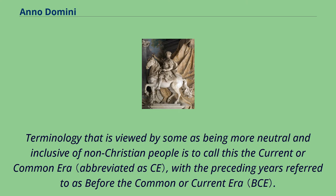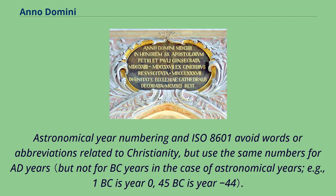Terminology that is viewed by some as being more neutral and inclusive of non-Christian people is to call this the 'current or common era,' with the preceding years referred to as 'before the common or current era.' Astronomical year numbering and ISO 8601 avoid words or abbreviations related to Christianity, but use the same numbers for AD years.